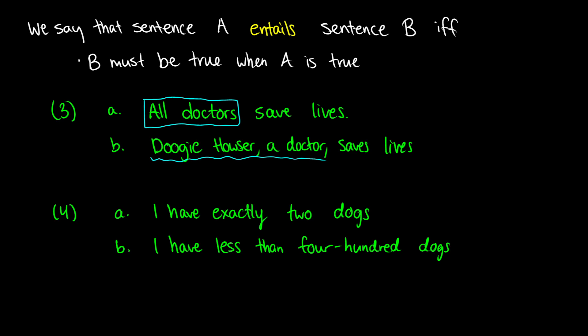Here's another pair: 'I have exactly two dogs.' If you have exactly two dogs, that means you also have less than 400 dogs, more than zero dogs, less than five dogs, and between negative 500 and 500 dogs. All of these are facts that arise from the first sentence being true. These are entailments — some are a little silly, especially number four, but it goes to show the point. These are ones where our intuition does really well.